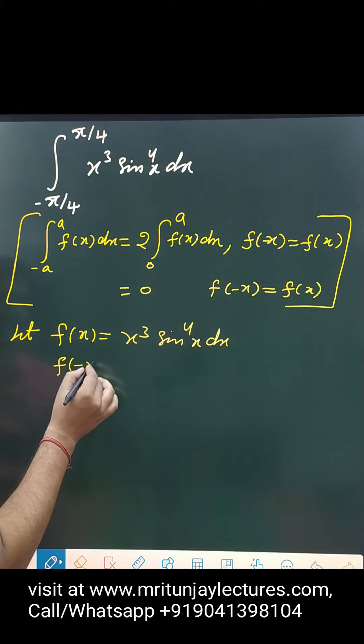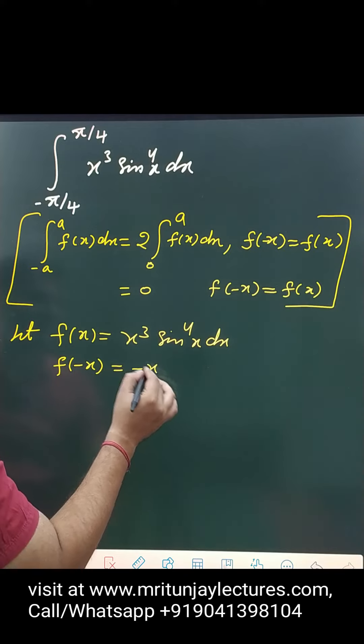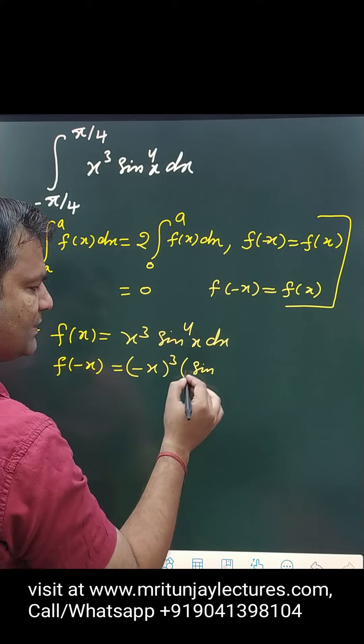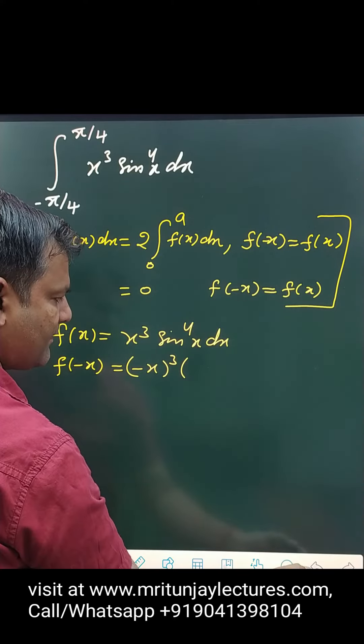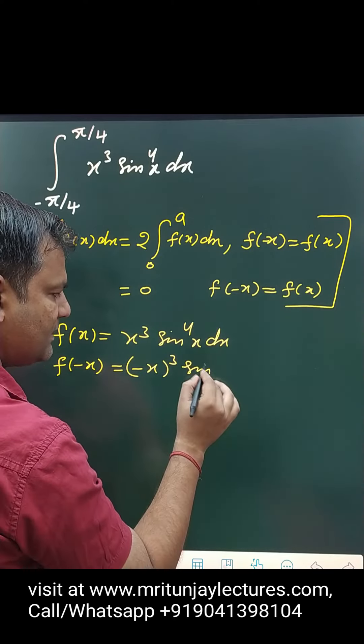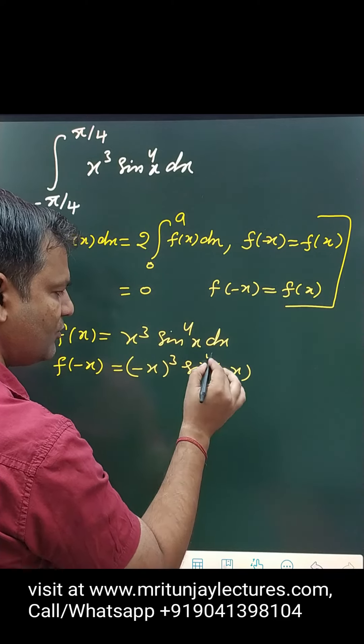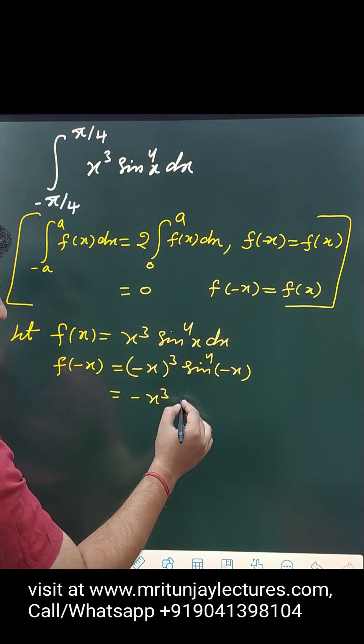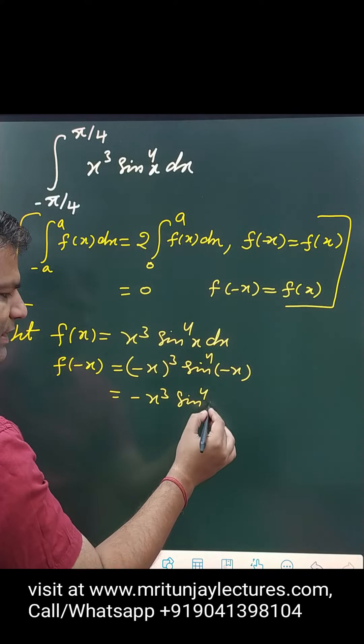So if x is replaced to minus x, then sin of minus x to whole power 4. And that value is minus x cube and that one is sin to power 4 x.